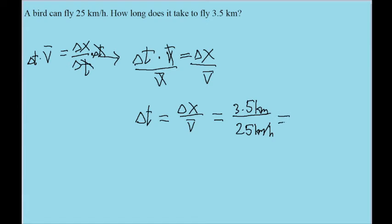Plug this into your calculator, and we find a time period in hours of 0.14. This is in hours because that's what the problem gives us the units in, kilometers per hour. So this is how long it takes for the bird to travel 3.5 kilometers.